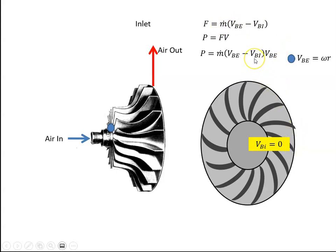But I've said that the velocity at the inlet is zero, so the power becomes m V_BE squared, V_BE times V_BE.